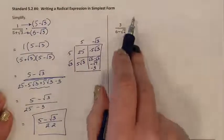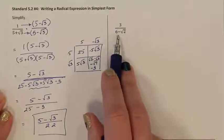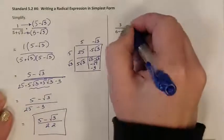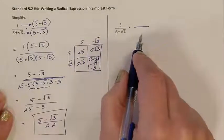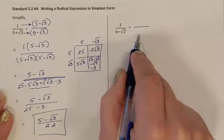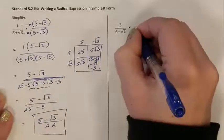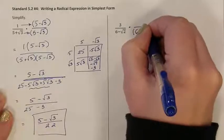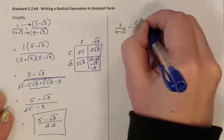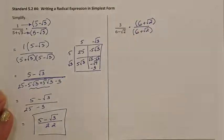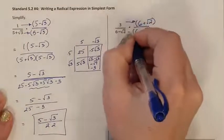Let's apply that to this next problem. I need to simplify and rationalize the denominator because there's a square root. I'm multiplying by a fraction — the conjugate of the denominator. Think of it like perfect squares: if this was the minus version, we need the plus version. The numerator and denominator of our multiplying fraction are the same, so it equals 1. We multiply fractions straight across.